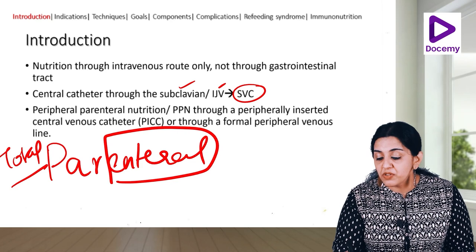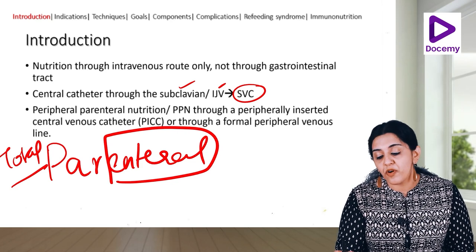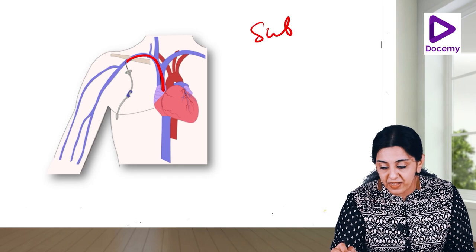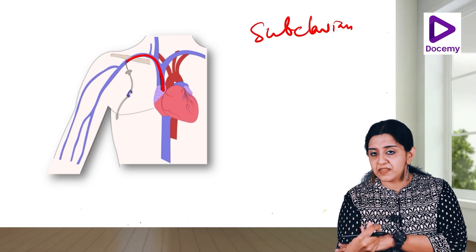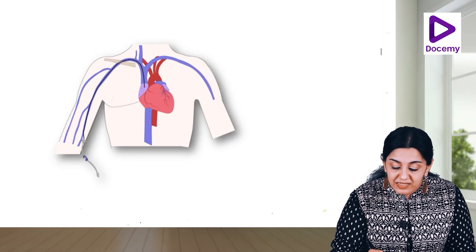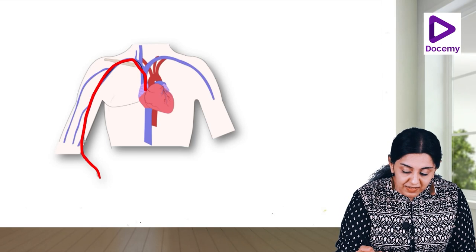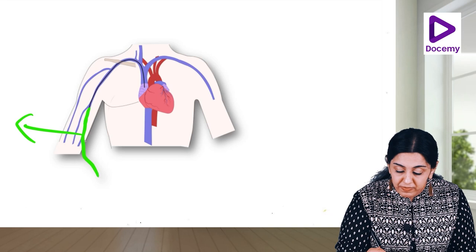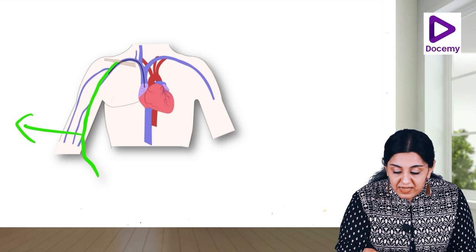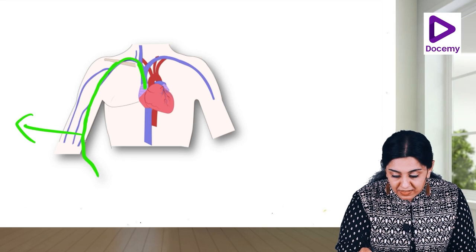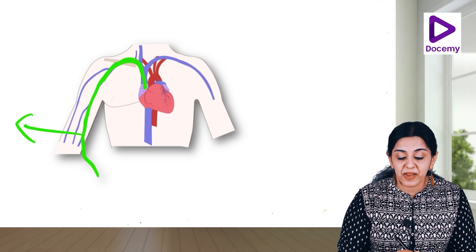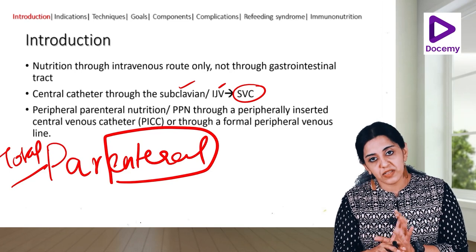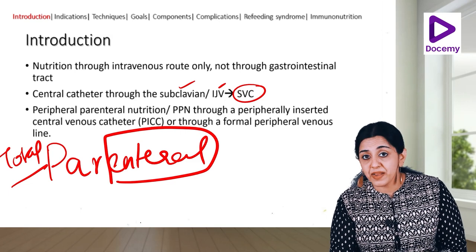Peripheral parenteral nutrition (PPN) can be given through a peripherally inserted central venous catheter or through a formal peripheral venous catheter. A central venous catheter goes into a central vein like the subclavian - a vein not present in the extremity. A peripherally inserted central catheter (PICC) is a long catheter inserted into a peripheral vein like the cephalic or basilic vein, with the tip reaching the central veins.